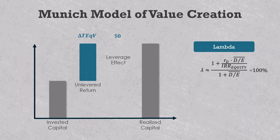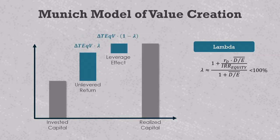If there is debt, Lambda can either be greater than one or less than one. Consider a deal with a positive equity return and therefore a positive IRR. In this case, Lambda would be less than one whenever a company's equity IRR outperforms its cost of debt. When this happens, we have a positive leverage effect and an unlevered return that is smaller than the total equity return. This is exactly what we would expect from our intuition.